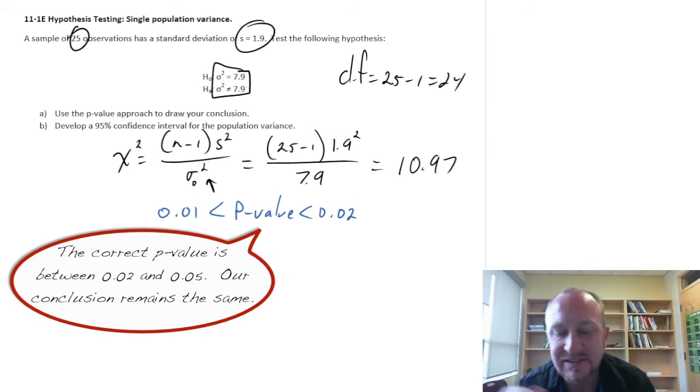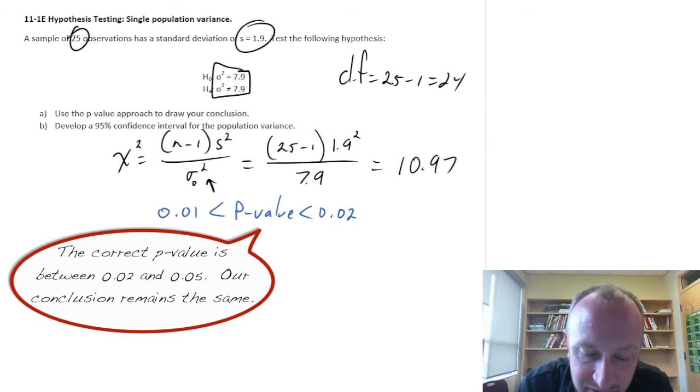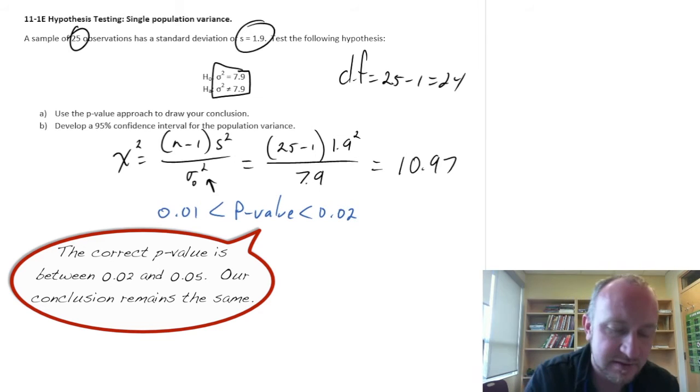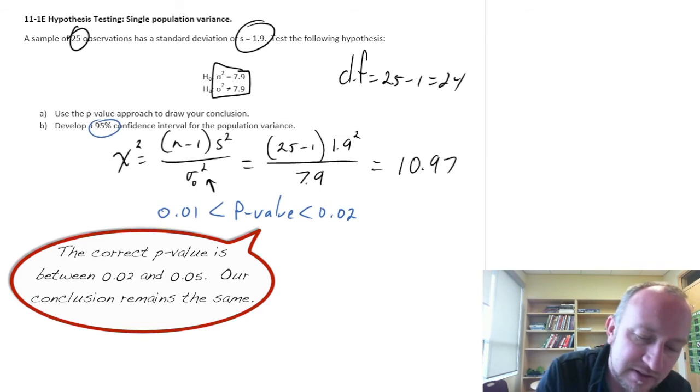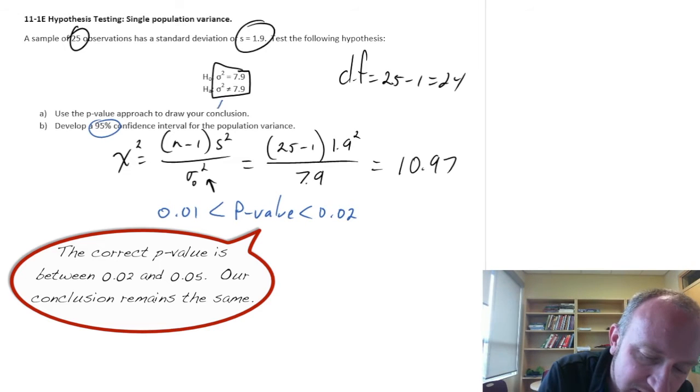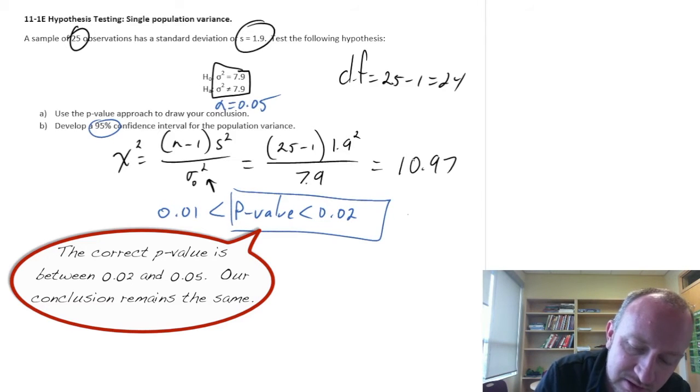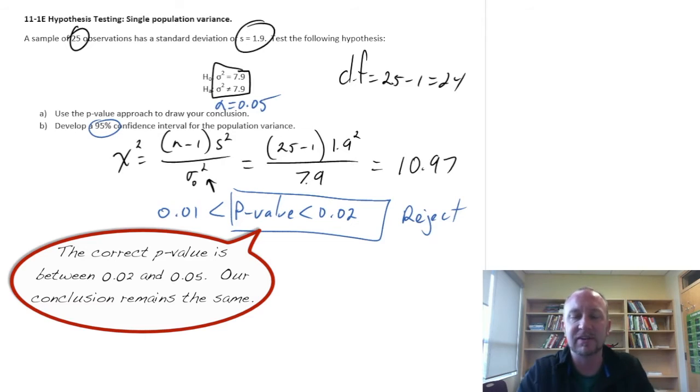So that gives us sufficient evidence. And with an alpha. Do we have alpha? We don't have alpha. But we're going to be doing a 95% confidence interval. So that must mean that alpha is 0.05. So if our p-value is less than 0.02. Then we can reject. And we have sufficient evidence here to support the alternative hypothesis. Whatever that means. We don't have any context here. So we can't really interpret that at all.